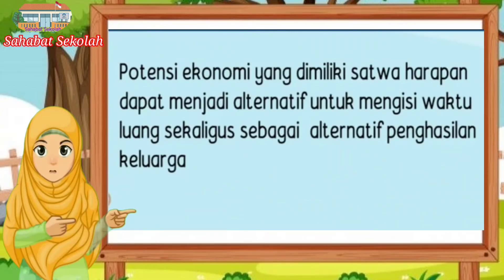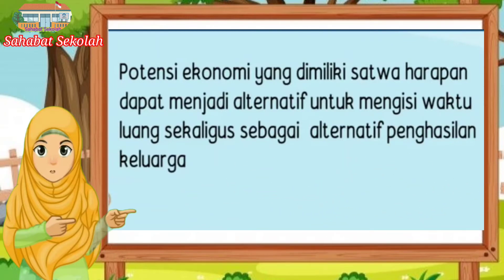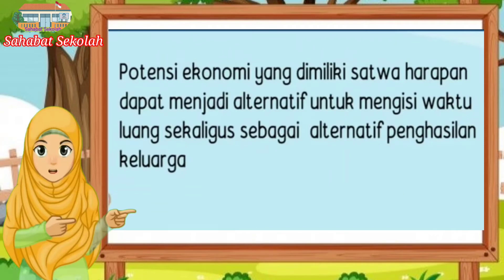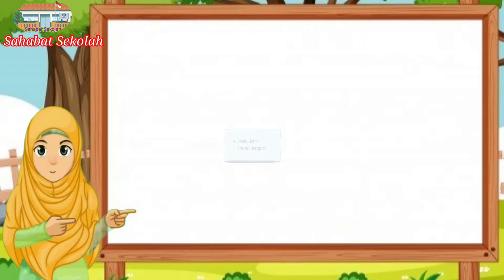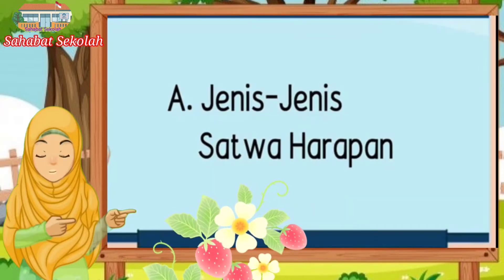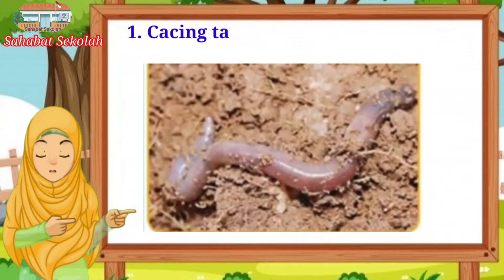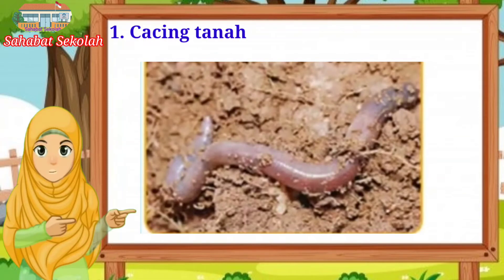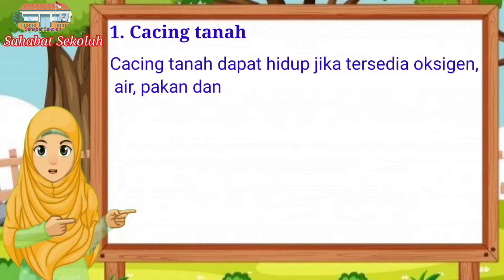Jadi apabila kita membudidaya satwa harapan, ada potensi ekonominya dan bisa menghasilkan penghasilan untuk keluarga kita. Kita bahas mengenai jenis-jenis satwa harapan. Yang pertama ada cacing tanah. Di sini ada pengertiannya — cacing tanah adalah hewan yang hidup di dalam tanah yang biasa kalian temui.